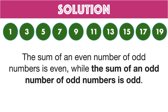So, there cannot be any possible way in which you can add any 5 numbers from the list to get a sum equal to 50, which is even. But, there are several ways to achieve this by performing certain modifications — that is, by using certain mathematical operations.